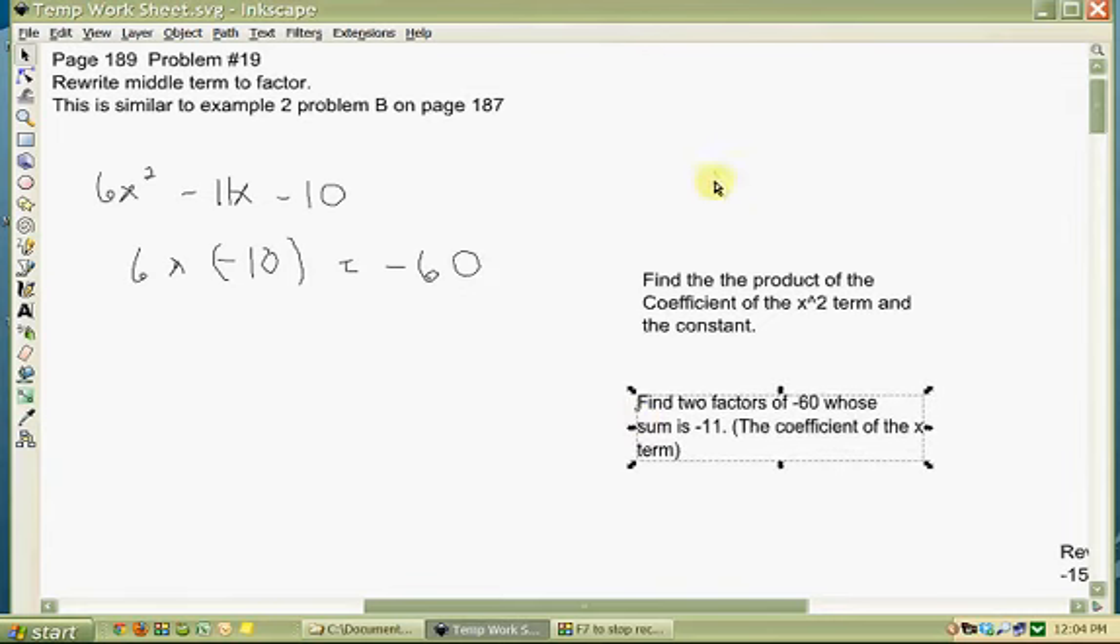Now it says find two factors of -60 whose sum is -11, the coefficient of the x term. Let's find factors of -60. We'll find factors of 60 first because we can play with the negative aspect later.